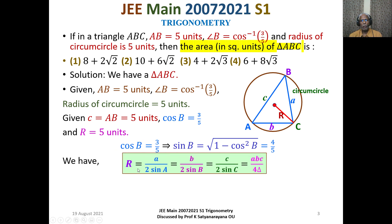We have the famous formula: capital R equals a divided by 2 sin A, equals b divided by 2 sin B, equals c divided by 2 sin C, equals the product of sides abc divided by 4 delta, where delta is the area of the triangle.